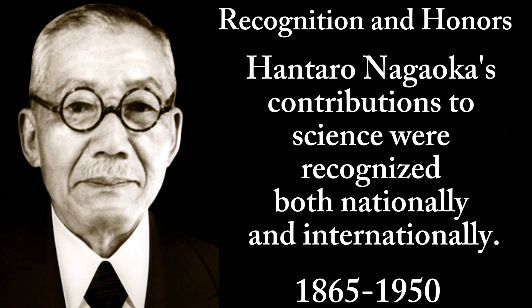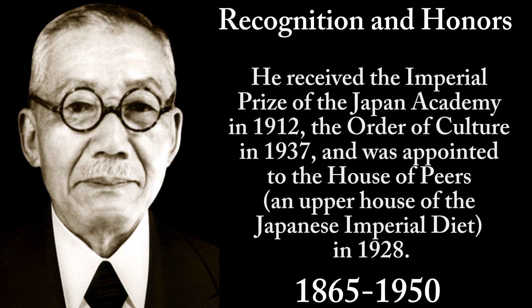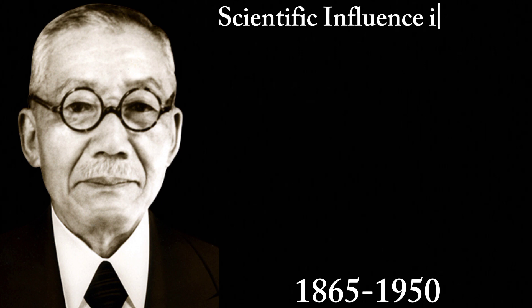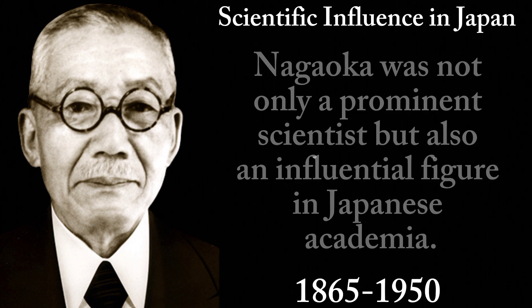Hantaro Nagaoka's contributions to science were recognized both nationally and internationally. He received the Imperial Prize of the Japan Academy in 1912, the Order of Culture in 1937, and was appointed to the House of Peers, an upper house of the Japanese Imperial Diet, in 1928.